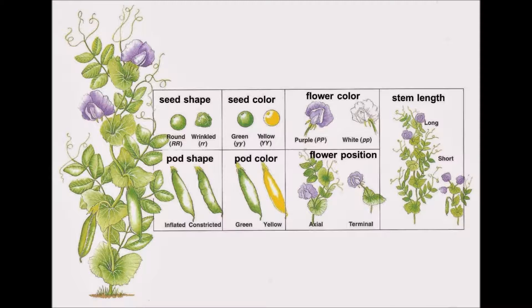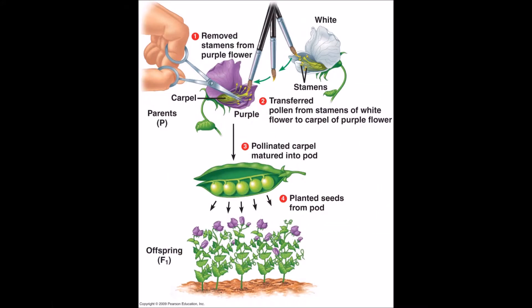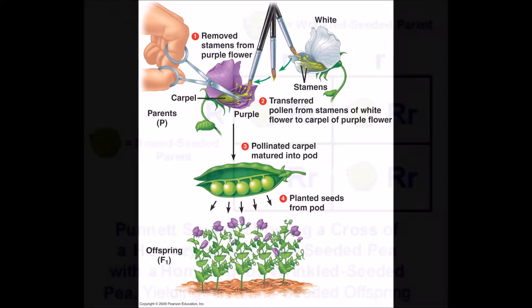But Mendel, the monk thought, I know what I'll do. I'll choose opposite traits and follow them through. Methinks I will study the garden pea to look for the whys of heredity. I'll choose size of plant, or I'll choose shape of seed, but for only one thing at a time I will breed.